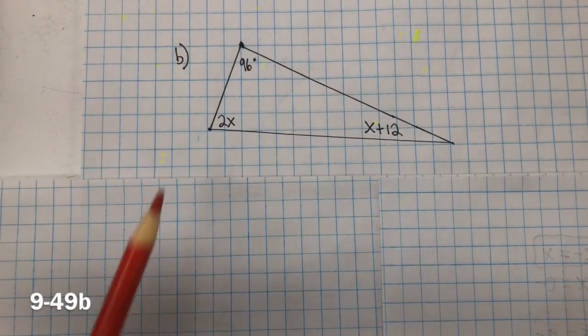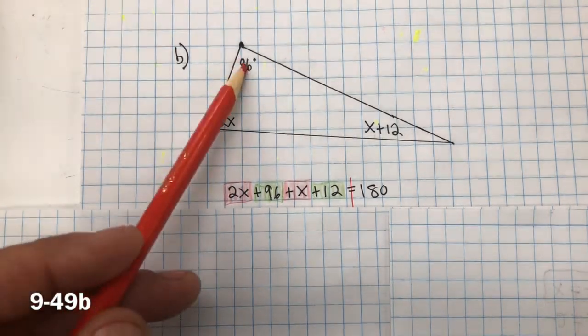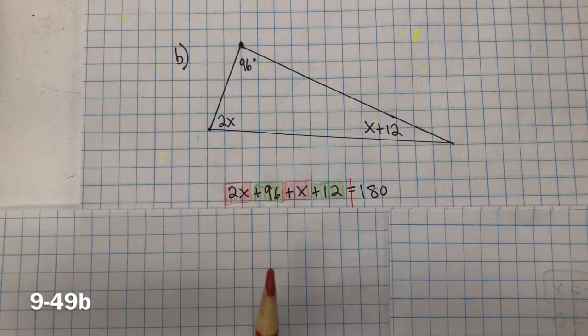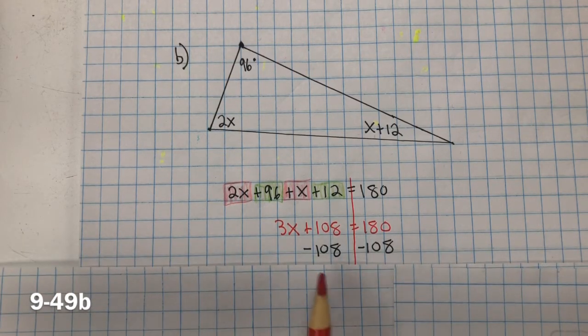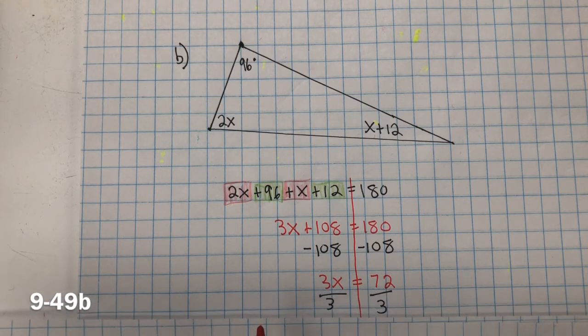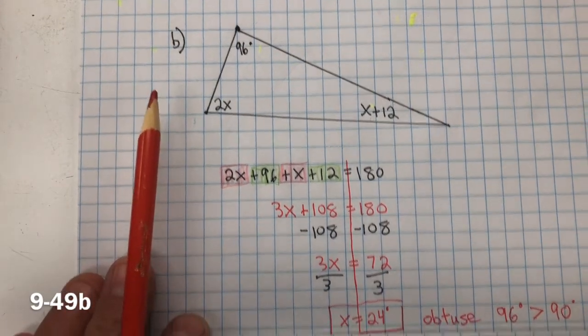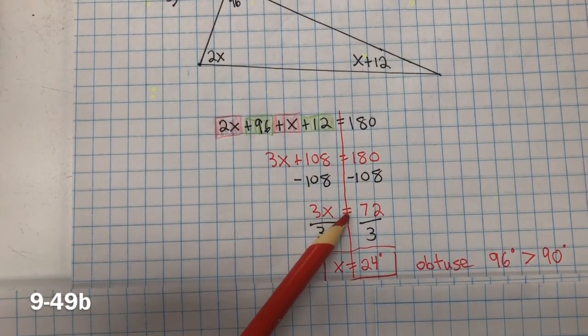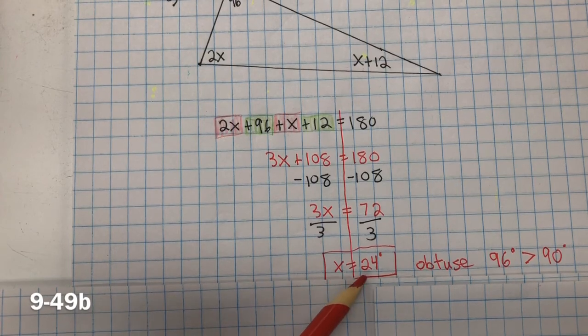For 49B, remember that the sum of the interior angles equals 180 degrees. So we're going to add 2X plus 96 plus X plus 12 equals 180 degrees. Combine like terms. Inverse property of addition is subtraction. So we subtract 108 from both sides. And we get 3X equals 72. Divide both sides by 3. We get a big one here. 72 divided by 3 is 24. X equals 24 degrees.